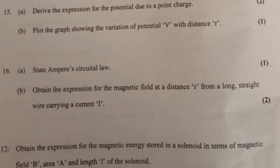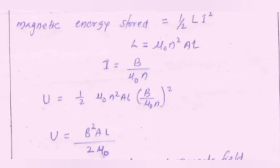Question 17: Obtain the expression for the magnetic energy stored in a solenoid in terms of magnetic field B, area A, and length L. Magnetic energy stored equals half LI squared. L equals μ₀n²AL. I equals B by μ₀n. U equals half μ₀n²AL times B by μ₀n whole squared. U equals B²AL by 2μ₀.